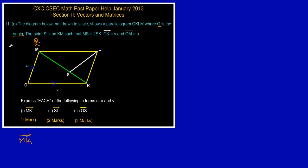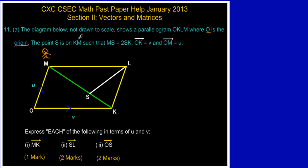Welcome back. In this video we're going to be looking at the solution to question 11a on the January 2013 CSEC math exam past paper — a typical vectors and matrices question. It states that the diagram below, not drawn to scale, shows a parallelogram OKLM where O is the origin. The point S is on KM such that MS equals 2SK, and OK equals V and OM equals U. We're asked to express each of the following in terms of U and V.